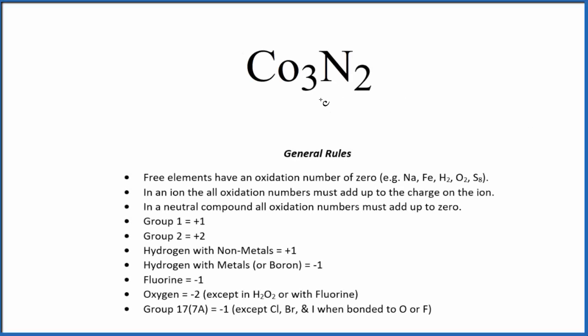Let's find the oxidation numbers for each element here in Co3N2. This is cobalt-2 nitride. Cobalt-2 nitride doesn't have a negative or positive sign, so this is a neutral compound. We don't have an ion here.